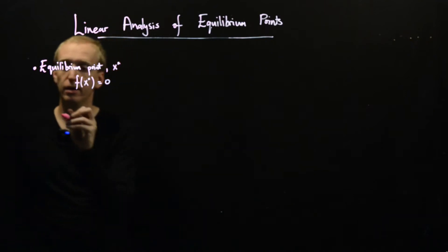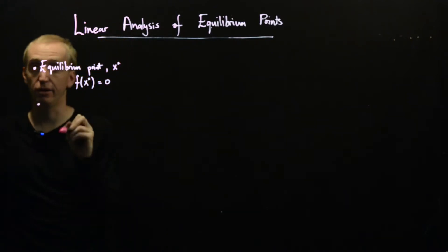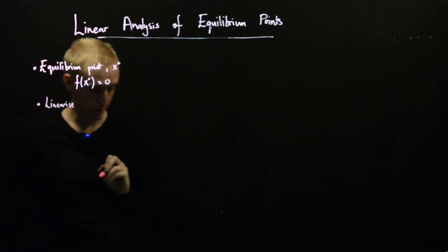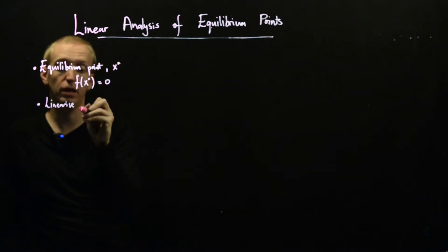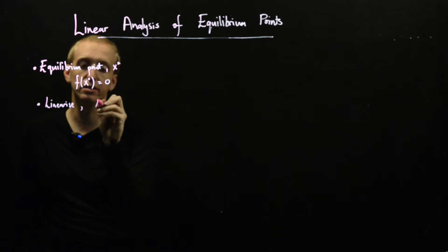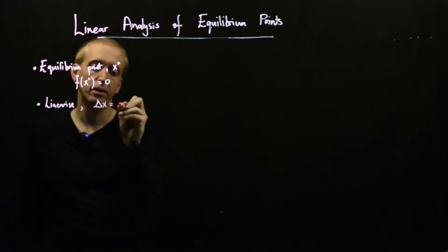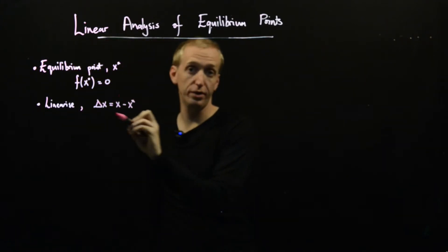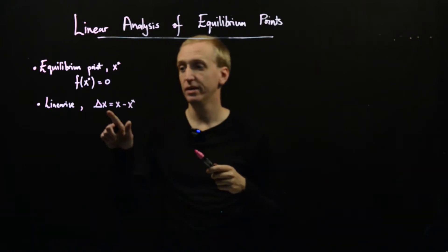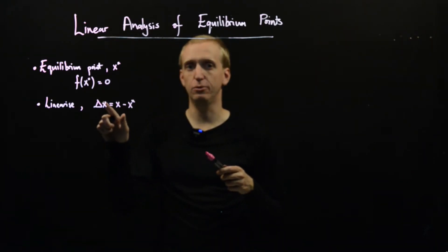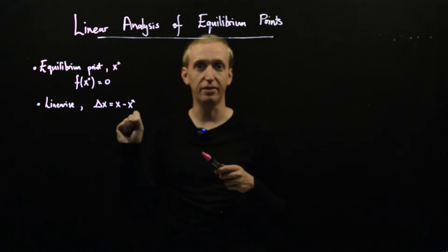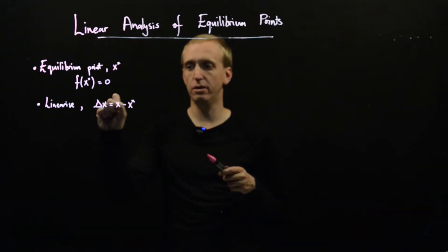So that's an equilibrium point and when we linearize we linearize around that point. So to linearize we typically introduce a new variable delta x equals x minus x star. So this is just a coordinate shift and the purpose of this coordinate shift is just to put the equilibrium when written in these new coordinates at the origin. So delta x equals zero means that x is at x star meaning we're at an equilibrium point.